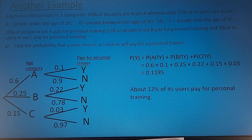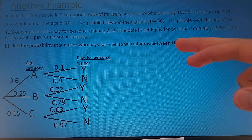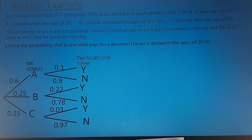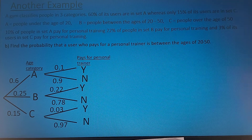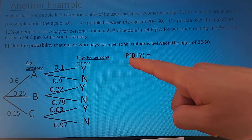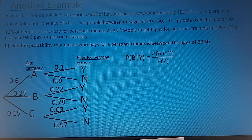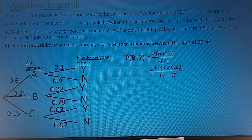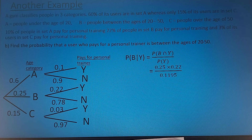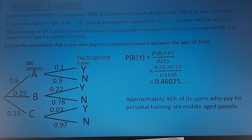This will be crucial for the gym to plan ahead. Now find the probability that a user who pays for training is between the ages of 20 to 50. We're conditioning on the fact that they pay for training — within that set, what's the likelihood they come from group B? We want the probability of B given Y. Using the conditional probability formula, the intersection of B and Y divided by the probability they pay for a personal trainer gives about 46% — users who pay for training are middle aged.